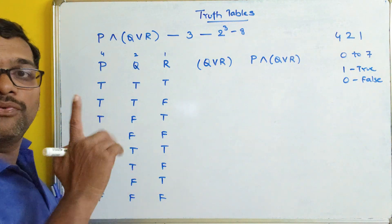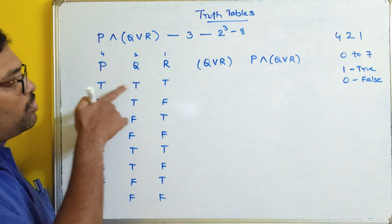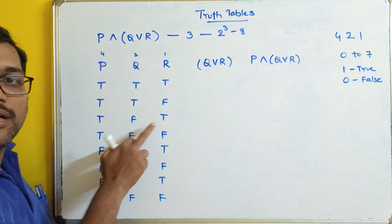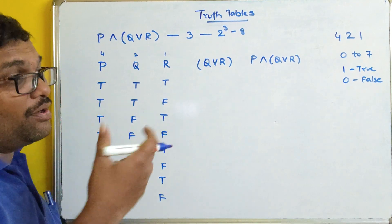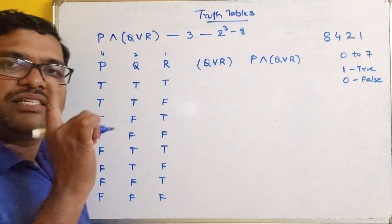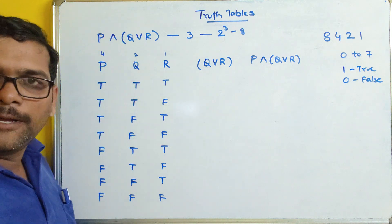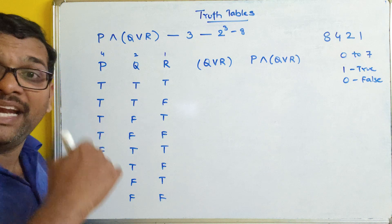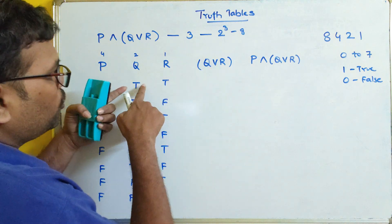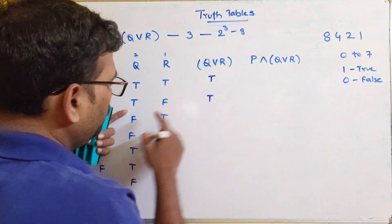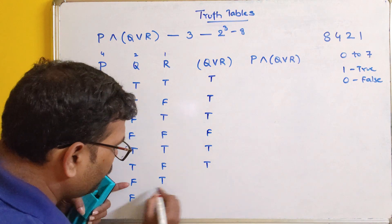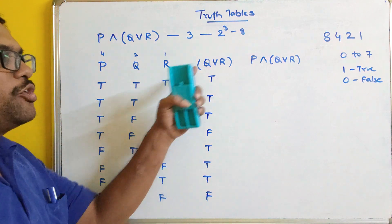Now computing Q ∨ R: T∨T=T, T∨F=T, F∨T=T, F∨F=F, T∨T=T, T∨F=T, F∨T=T, F∨F=F.